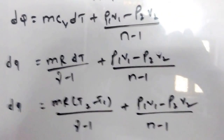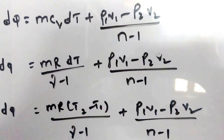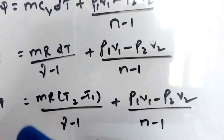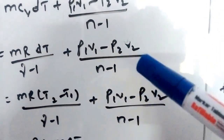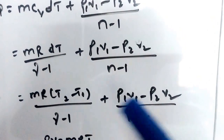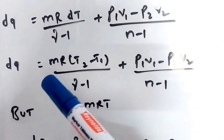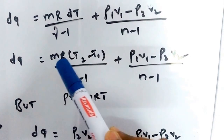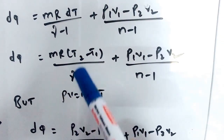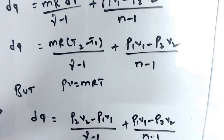This equation can be rewritten as M·R into (T2 minus T1) plus P1V1 minus P2V2 divided by n minus 1. From the ideal gas equation PV equals MRT, we can replace M·R·T2 with P2V2 and M·R·T1 with P1V1.